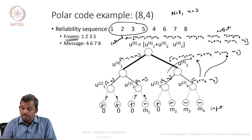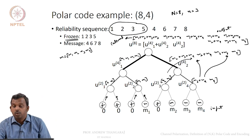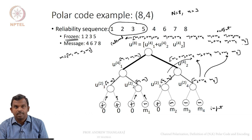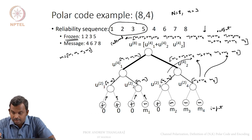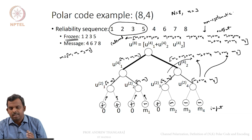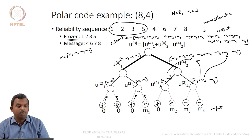You can construct a 4×8 generator matrix from this. Note this is not systematic encoding since M1, M2, M3, M4 do not appear by themselves in the codeword. Once you fix length, number of message bits, and have a reliability sequence, you can always do polar encoding. This tree representation gives a very simple way to implement the encoding as well.